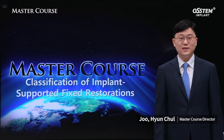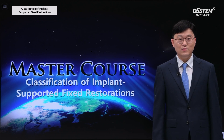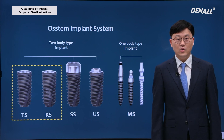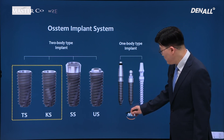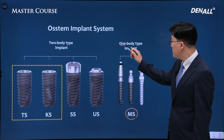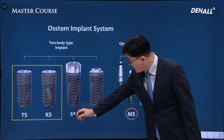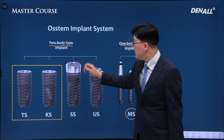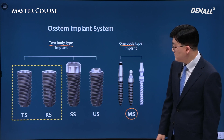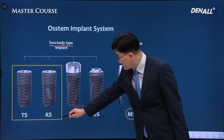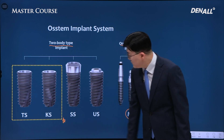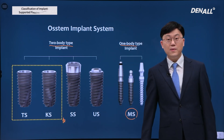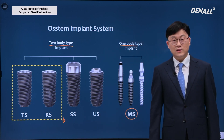Greetings, I'm Dr. Juyeonchal. Today I want to talk about the classification of implants and specifically fixed restorations. All SIM implants can be divided into one-body and two-body type implants. MS implant is representative of one-body, and TS and KS are representative of two-body implants. The most frequently used implants are TS and KS, which are internal type bone level implants, and I want to focus on fixed prosthesis focusing on TS and KS implants.